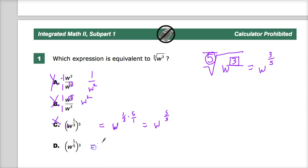Now the last one. Three times one is three. Five times one is five. W to three fifths power. So there you go.